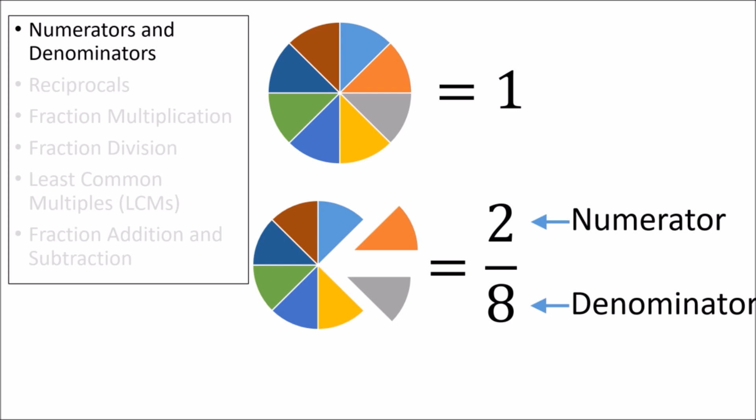The top number in the fraction is called the numerator and the bottom number is called the denominator. This fraction can be converted to a decimal with our calculator by dividing the numerator by the denominator. For example, the fraction 2 eighths is equivalent to the decimal value 0.25.